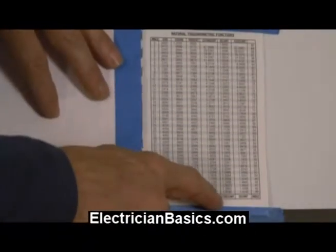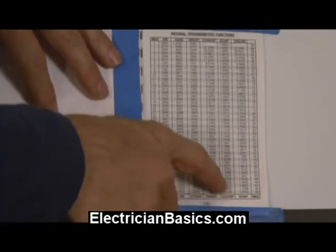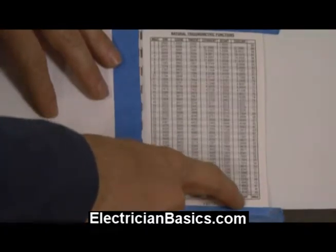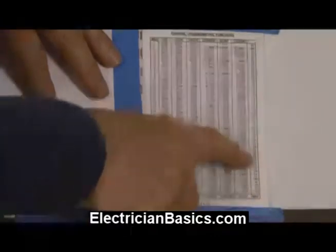Now, again, if we look down here, after 45 degrees, the cosecant is the second column from the end, and the secant is the end column, and that's when we start going from 45 to 46 on the way up.